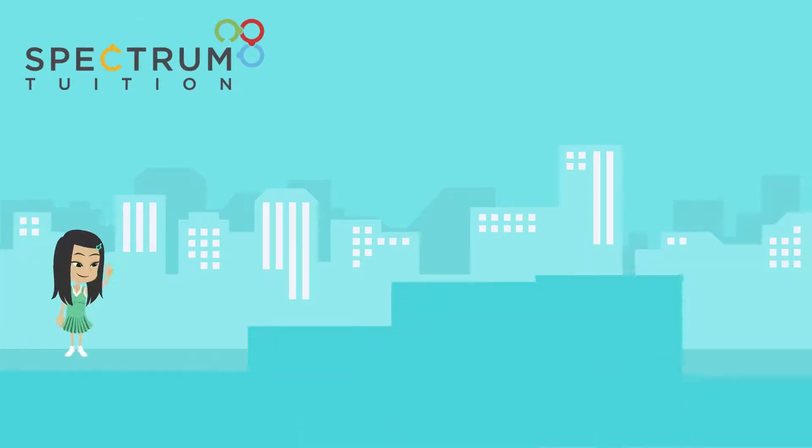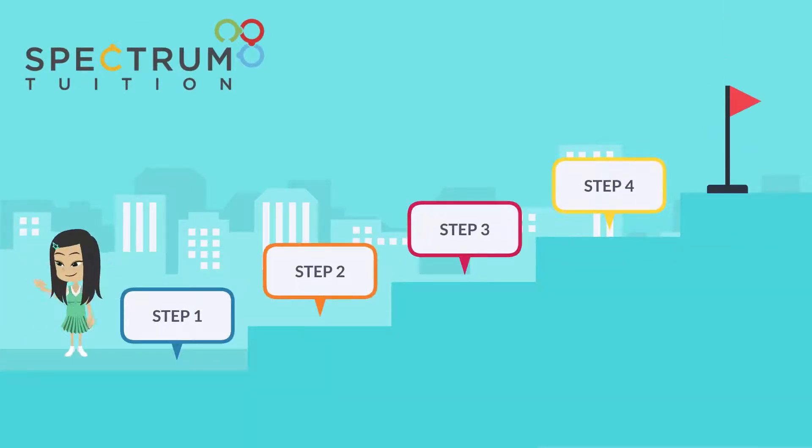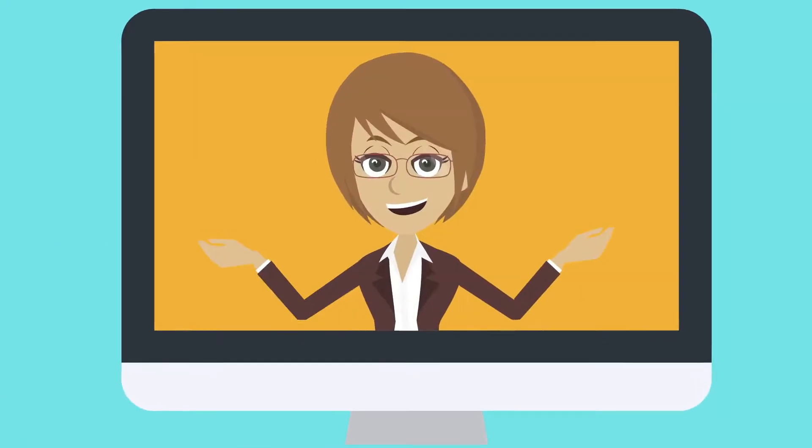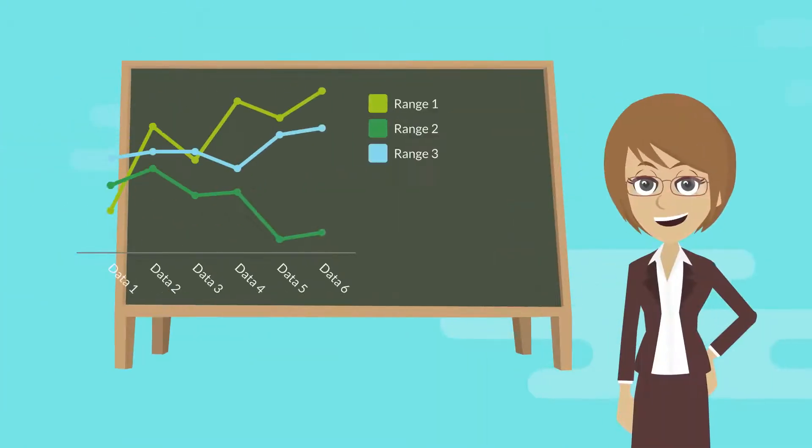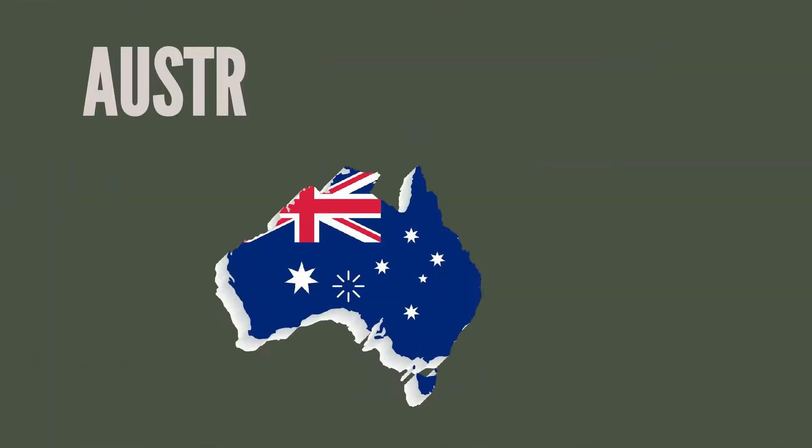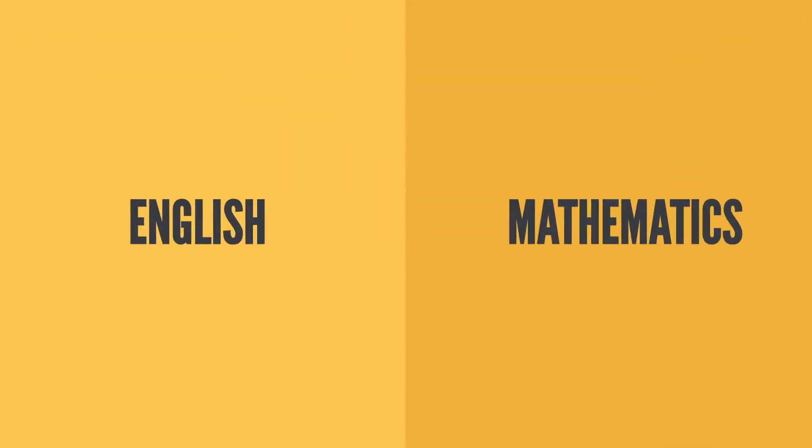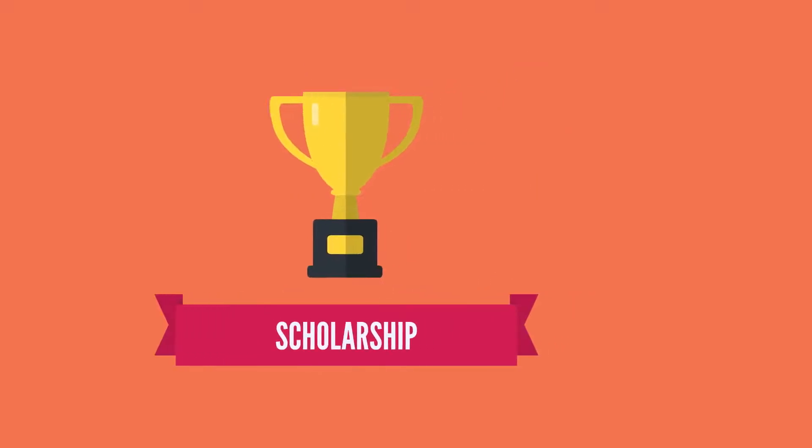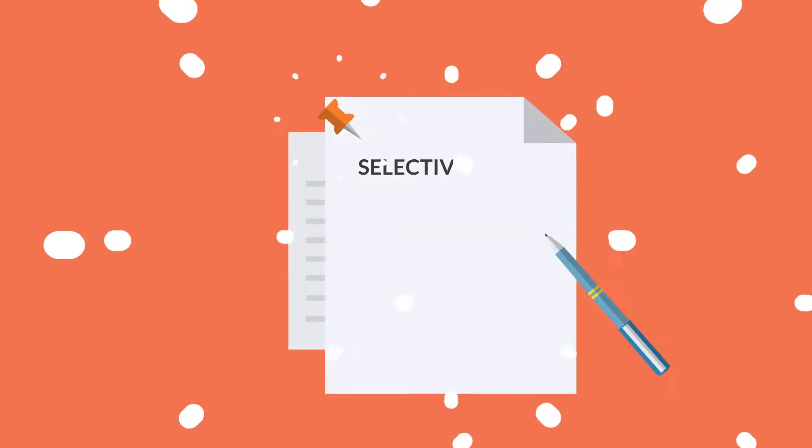Spectrum Tuition helps students learn by going step by step through easy to understand online video lessons or in-person classes, which are mapped directly to the Australian curriculum for English and mathematics for grade prep to year 12. They also have classes to prepare students for scholarship and selective exams.